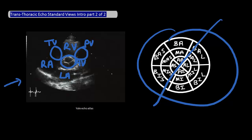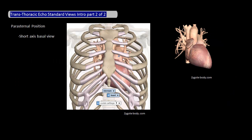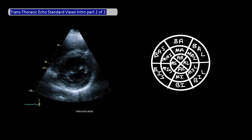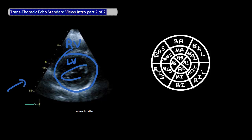The third view is the short axis basal view at the parasternal position. If you're looking at the heart from the front, the cut across the heart is about right below the mitral valve. Here's an example of this view on a real echo. We're still at the parasternal position, so the right ventricle is up here and the left ventricle is here. You should be able to see the mitral valves within the left ventricle, and you're looking at these six basal parts of the left ventricle.